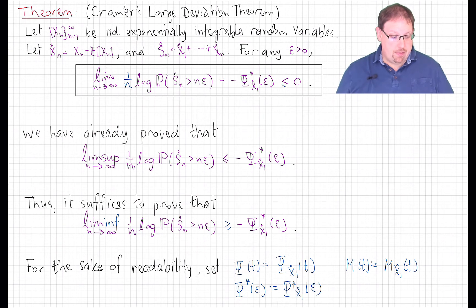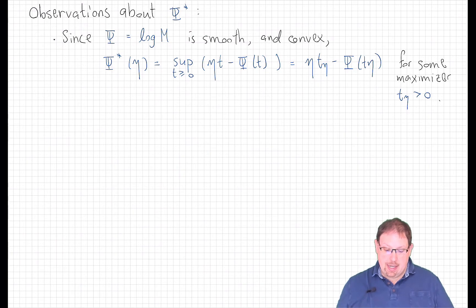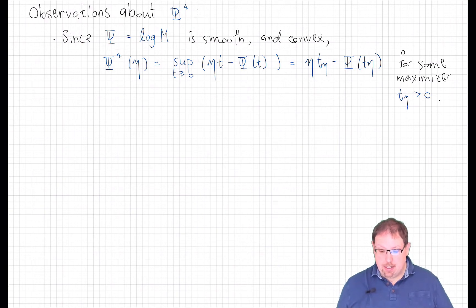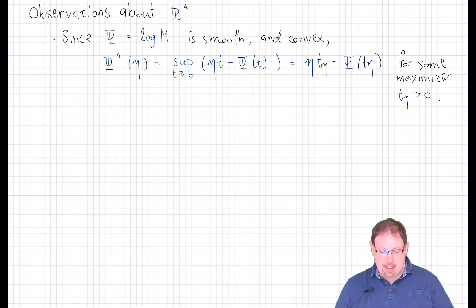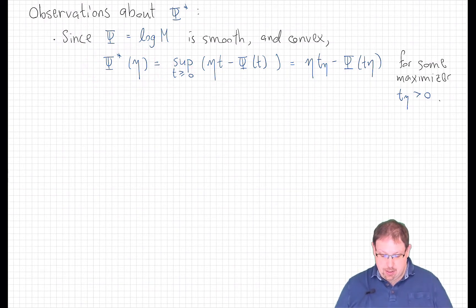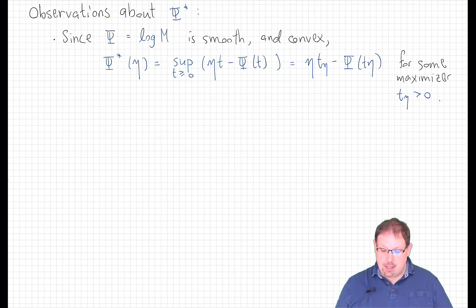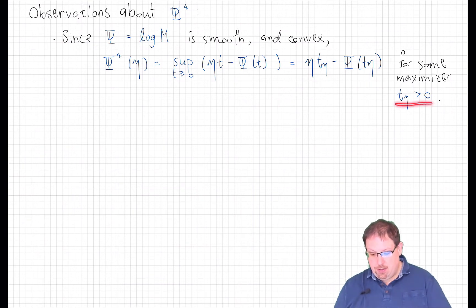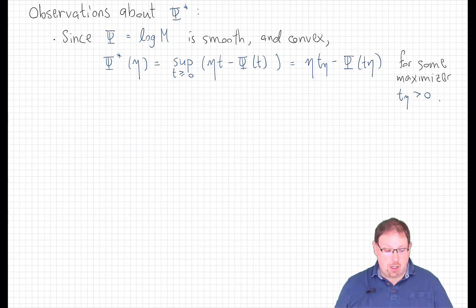Let's start by reminding ourselves of the definition of the Legendre transform and its nice properties in this special case. Since psi is the log moment generating function in this exponentially integrable case, we know that it is a smooth, in fact real analytic function, and that it is convex, as we showed last time. That means that the Legendre transform, which is defined to be this supremum taken just over the non-negative reals, is actually a maximum achieved at some point. There can be more than one maximizer, but there will be a maximizer in the positive real line.